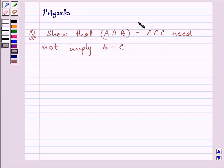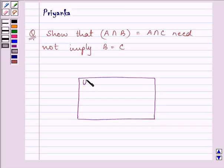Now this question will be more clear to us if we understand it with the help of a Venn diagram. Let this be the universal set. This be set A, set B, and this be set C.